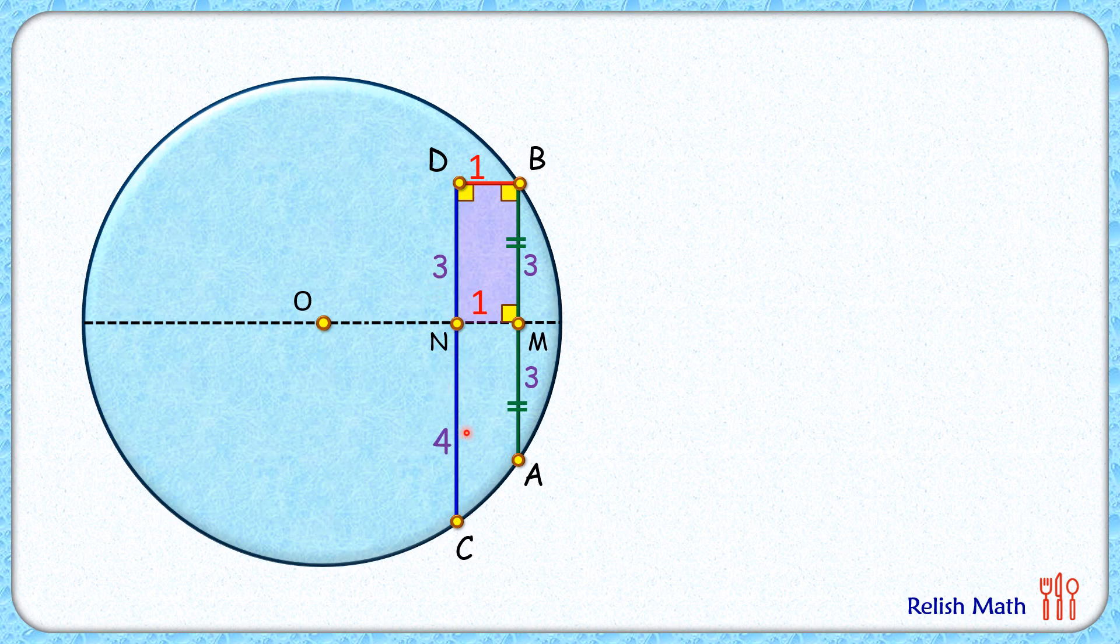Now let's assume the radius of this circle is R centimeters and the length ON is X centimeters.